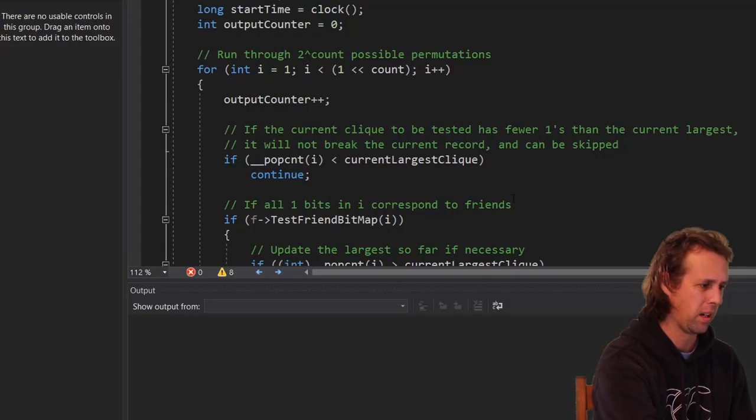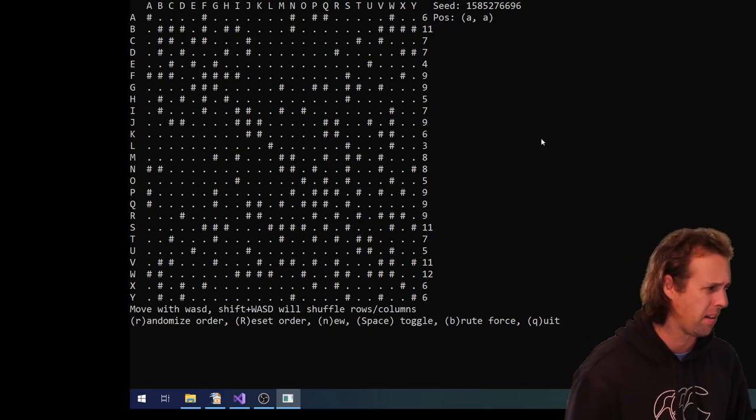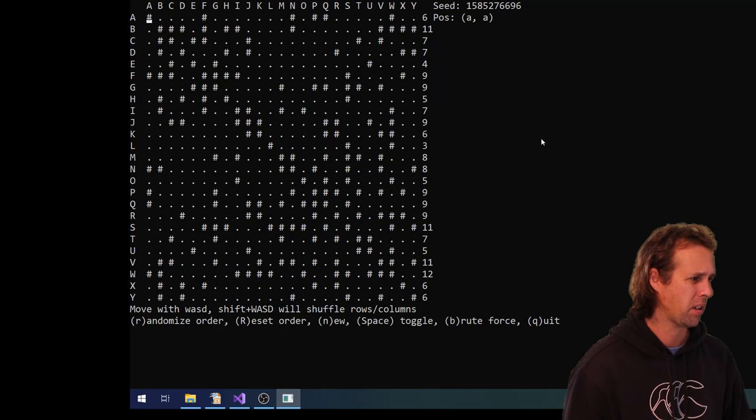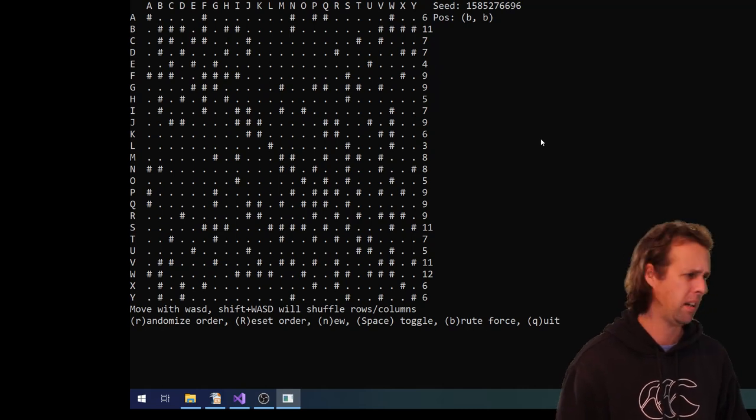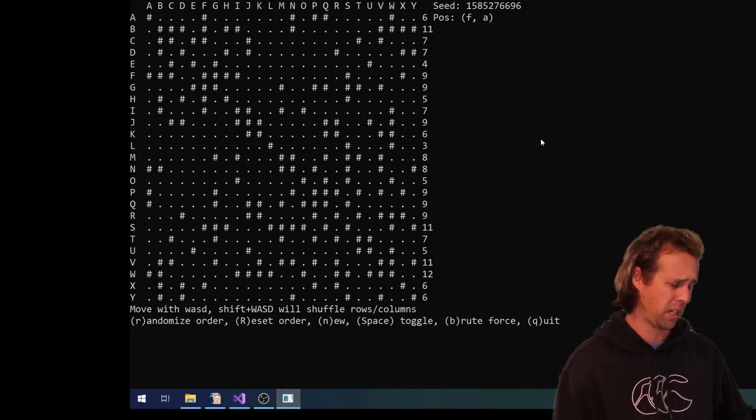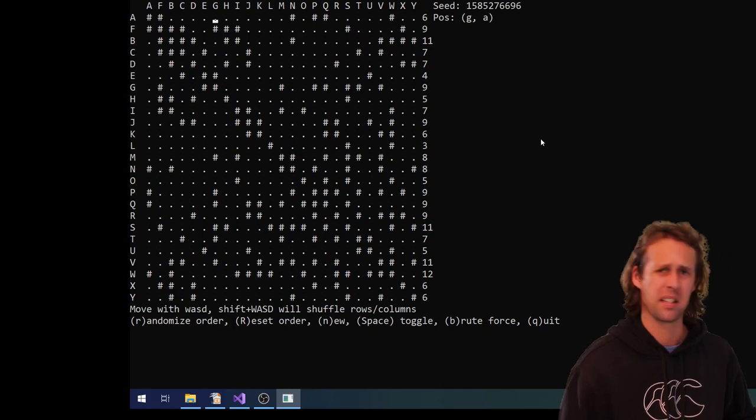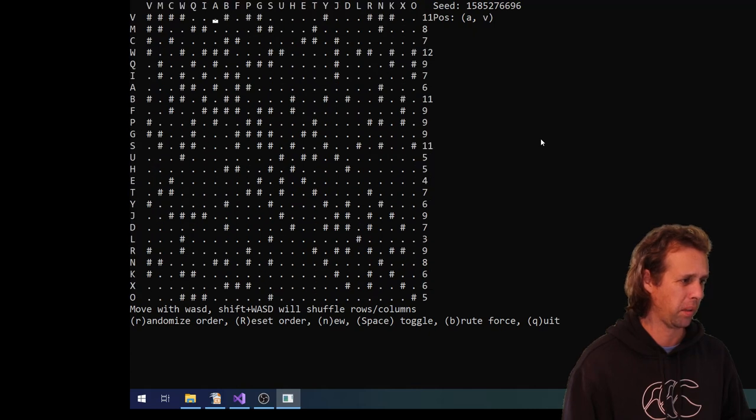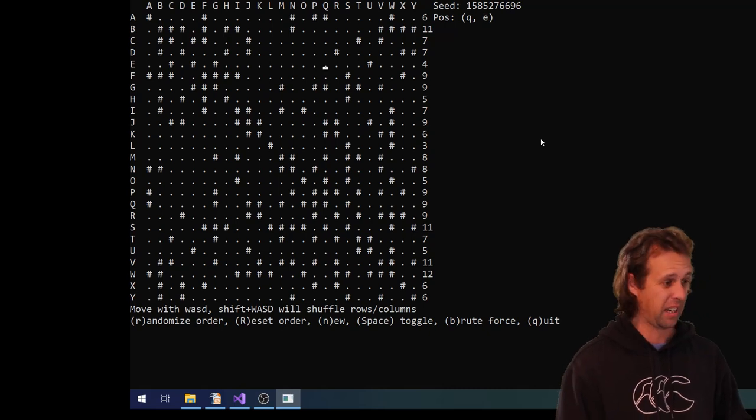What we're going to have a look at now is the clique playground program. This is the clique playground. What we can see here is a rather large graph representing the people in columns and rows. I'm controlling the cursor just here with the WASD keys. And what you can see is that everybody's friends with themselves for this particular version of the program. It just happens to make things easier if you do it that way. We've got some keys. If you want to shuffle these people around, then you hold shift and then push the button. Or we can just hit R and create a completely random order anytime we like. A capital R is reset the order back to alphabetic. We can turn friends on and off if you like. And we can also get a new graph if we want.